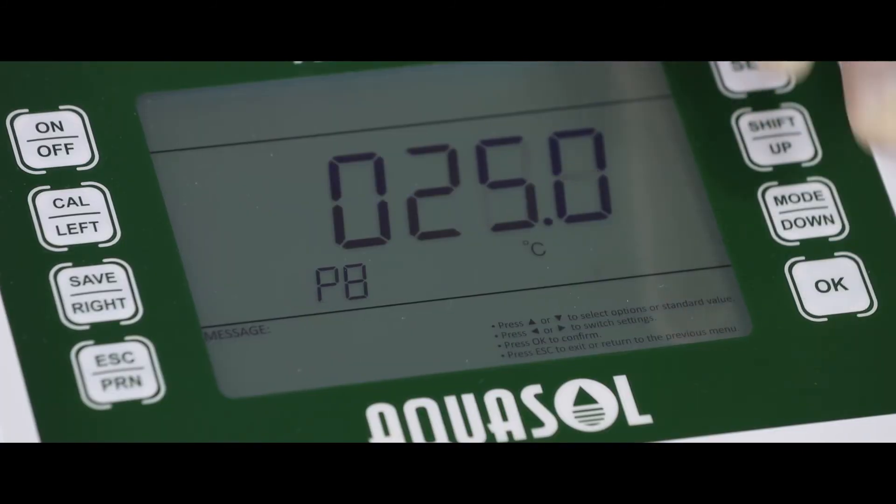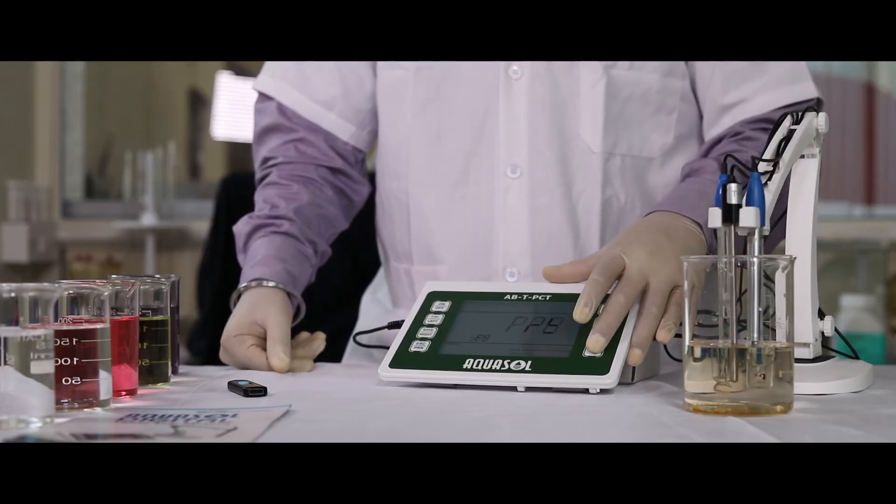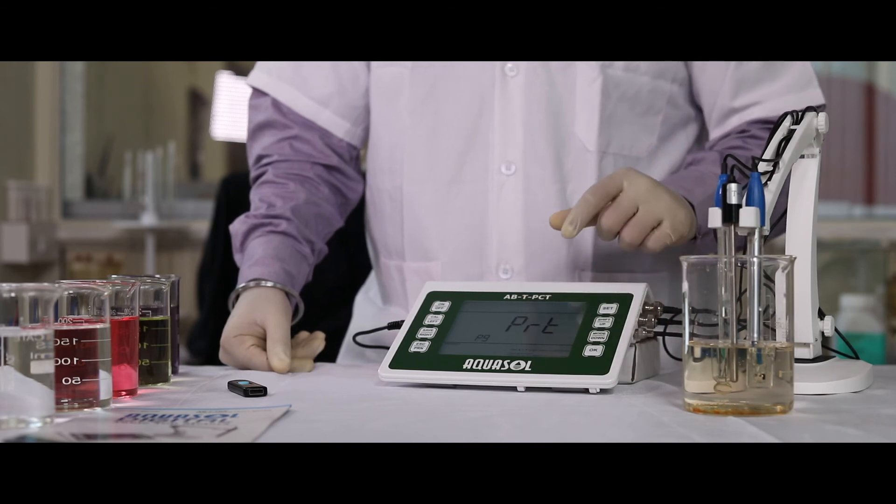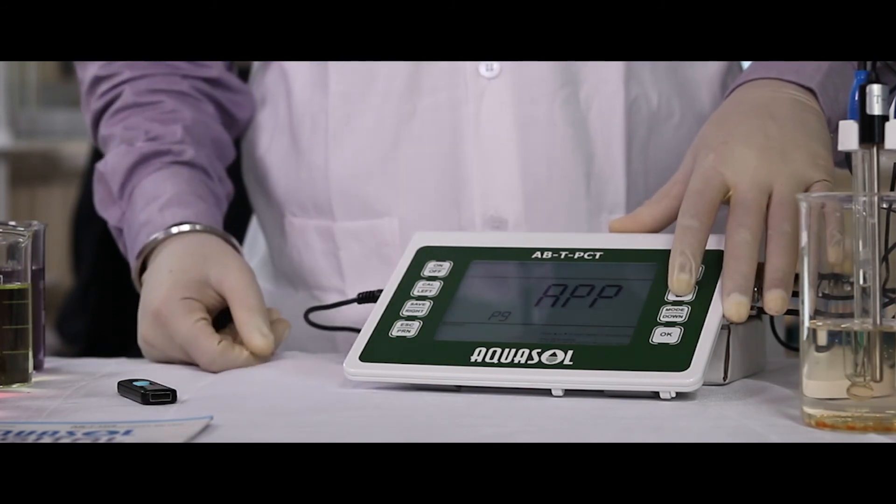P8 to enter the temperature of the solution manually. P9 to select Bluetooth operation mode. To print meter reading on Bluetooth printer. App mode to connect Android app.